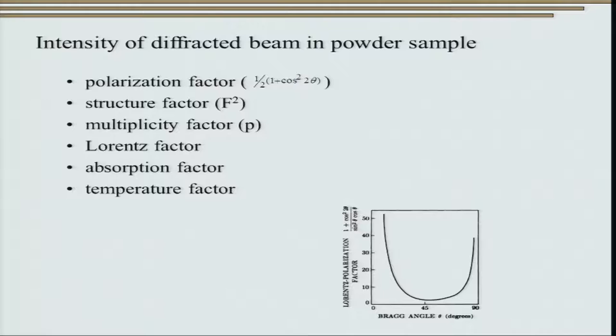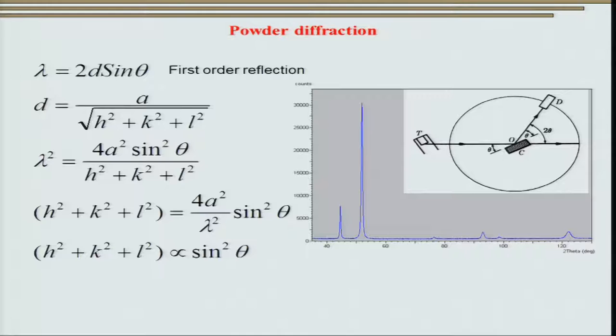Looking at the intensity of the peaks shown in the earlier slide: having gained knowledge about the kind of reflections from different Bravais lattices, you can identify that a pattern showing two peaks close together separated by a third peak, then again two peaks close together, corresponds to an FCC crystal structure with reflections at h²+k²+l² = 3, 4, 8, 11, 12, 16, corresponding to planes 111, 200, 220, 311, and so on. This is the peak pattern of nanocrystalline nickel.